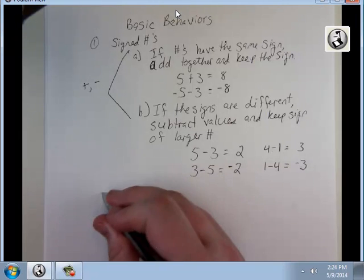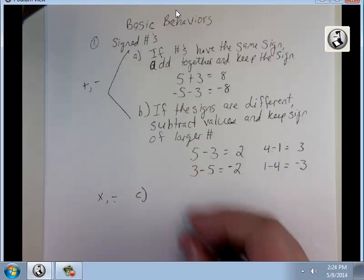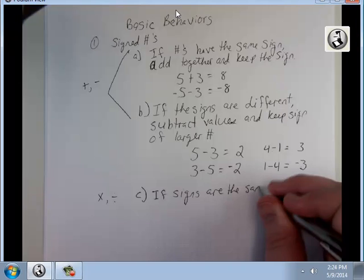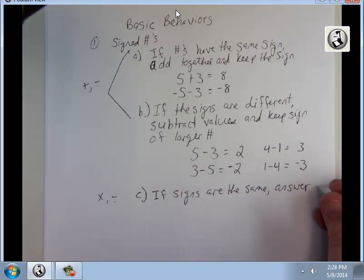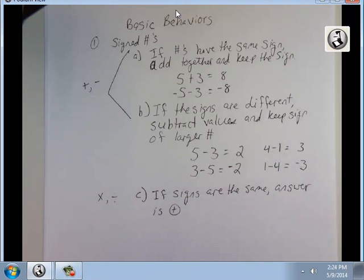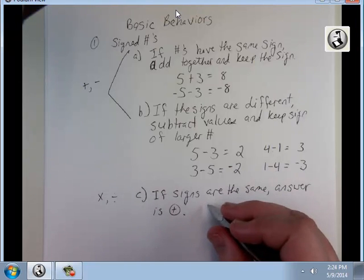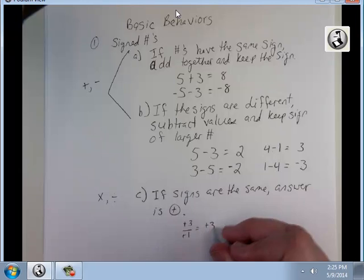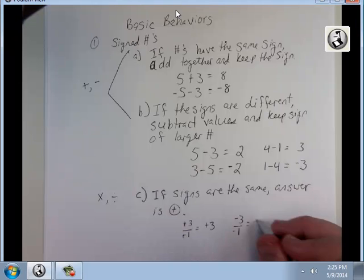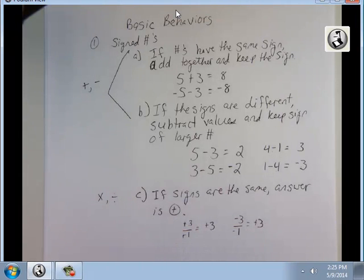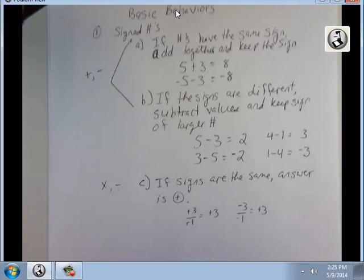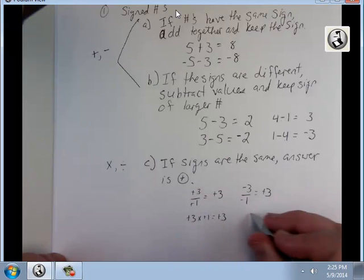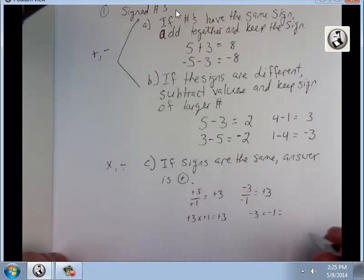For multiplying and dividing, if signs are the same, the answer is positive. So positive 3 divided by positive 1 is positive 3. Negative 3 divided by negative 1 is also positive 3. And the same thing for multiplication. Positive 3 times positive 1 is positive 3. Negative 3 times negative 1 is negative 3, sorry, positive 3.